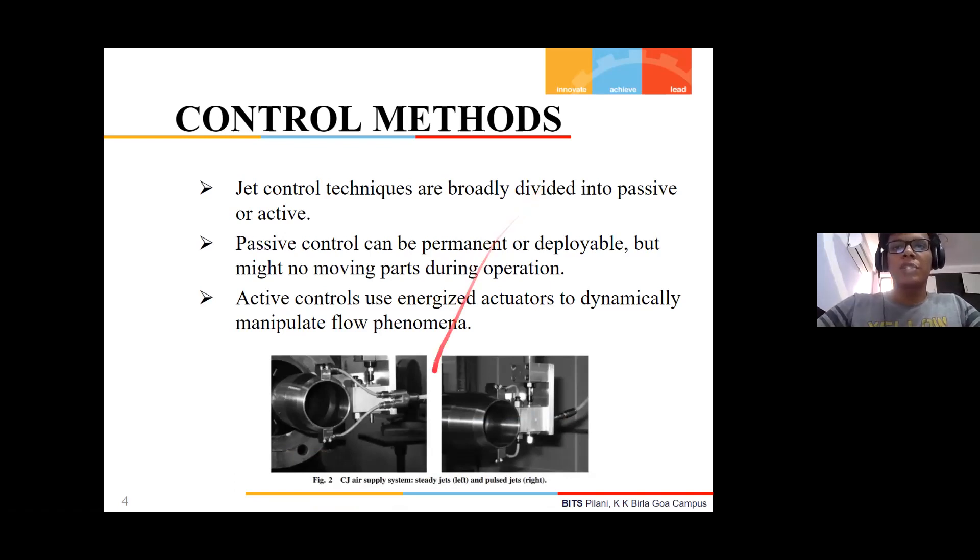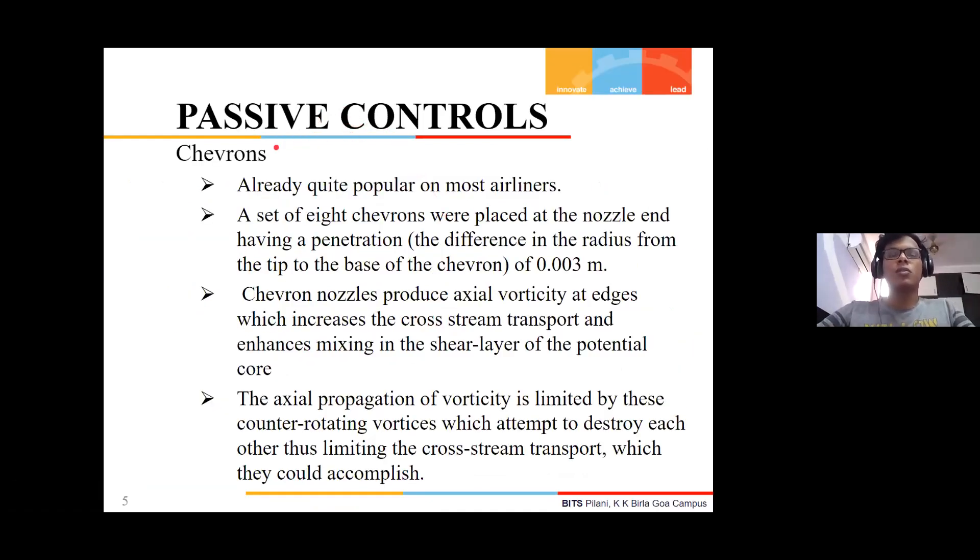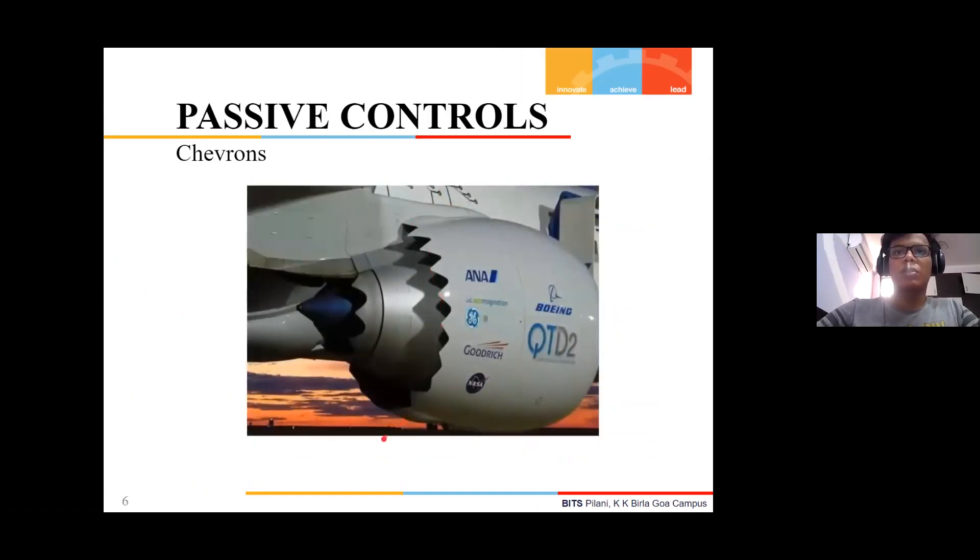Our project mainly consists of evaluating passive control methods. The first passive control method we looked at was chevrons, which are already quite popular in most airliners. In our experiment, a set of eight chevrons were placed at the nozzle end with a penetration of 0.003 meters. These are essentially the chevrons we're talking about.